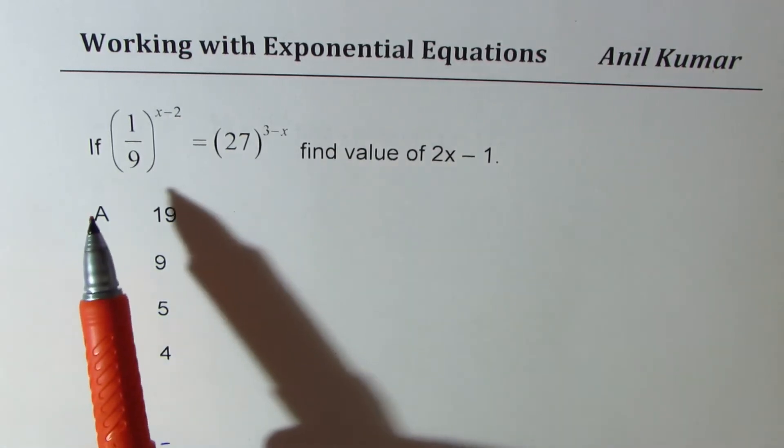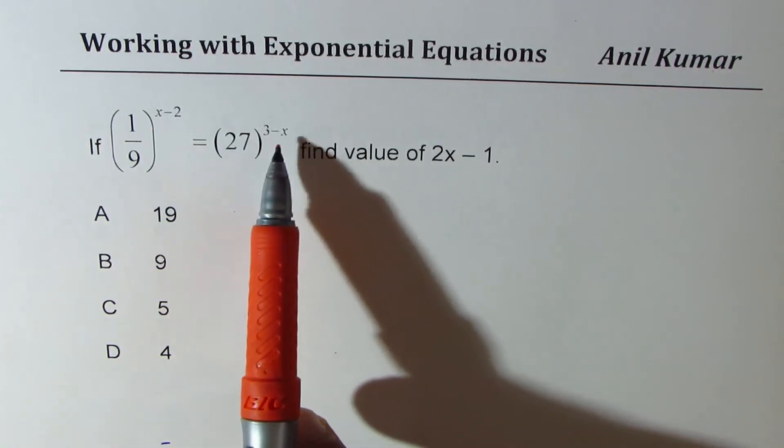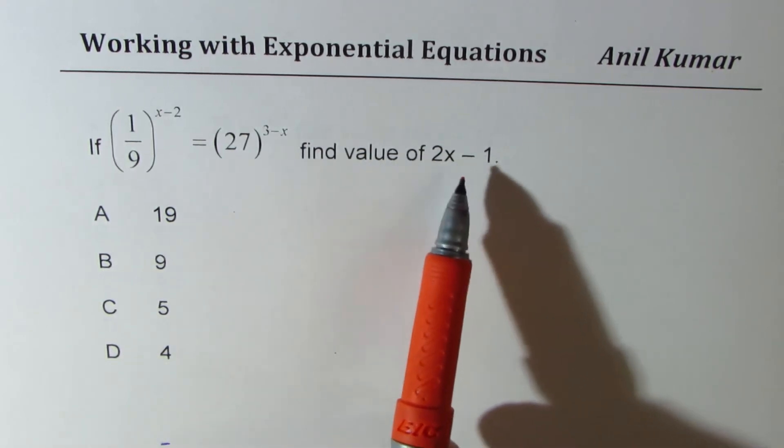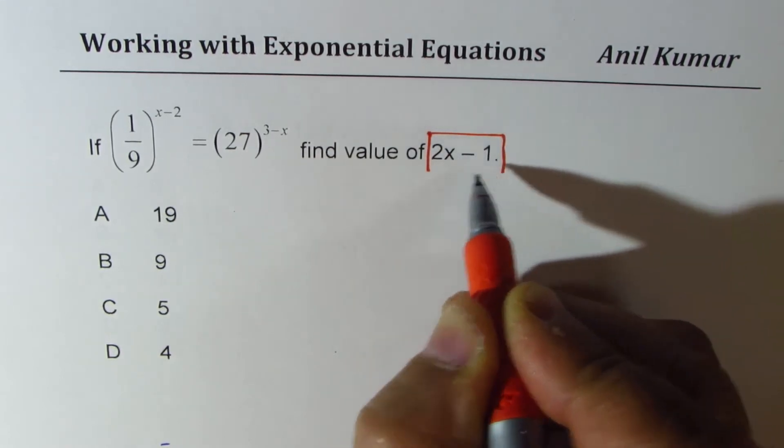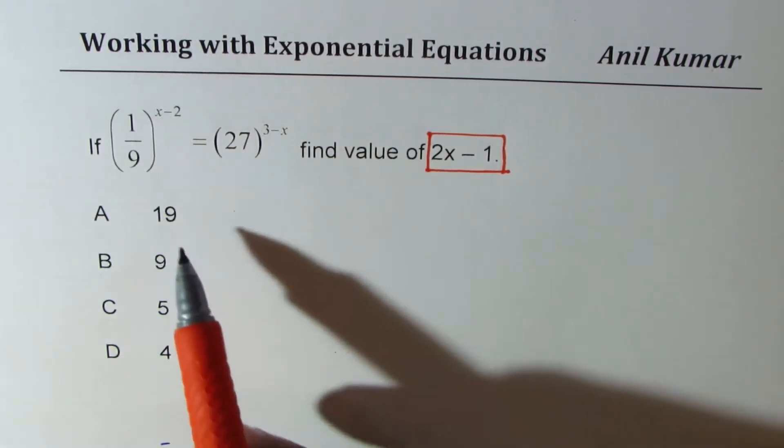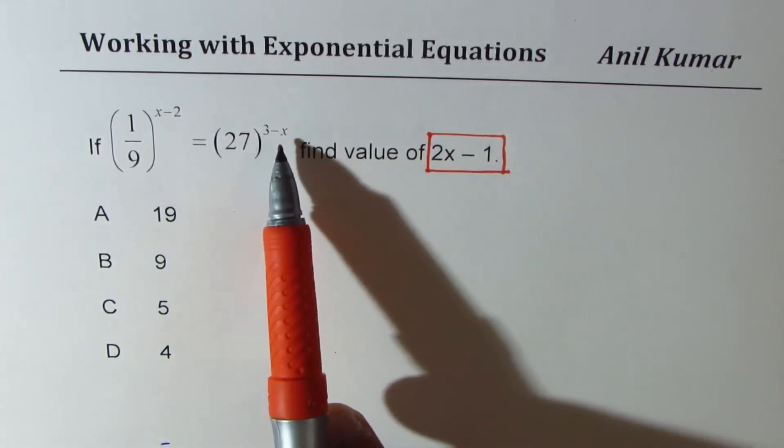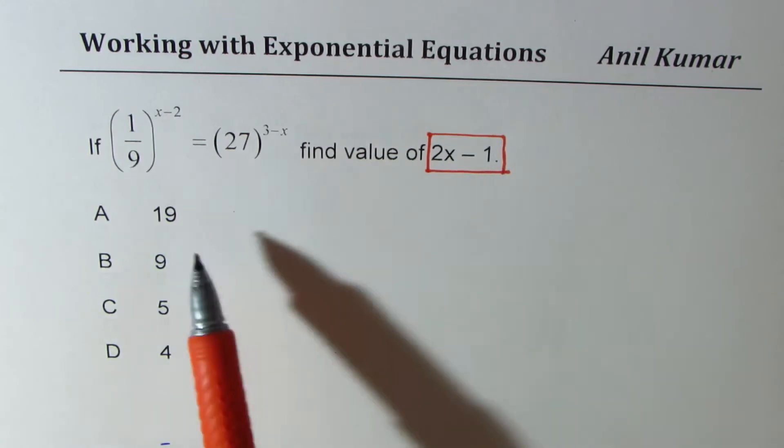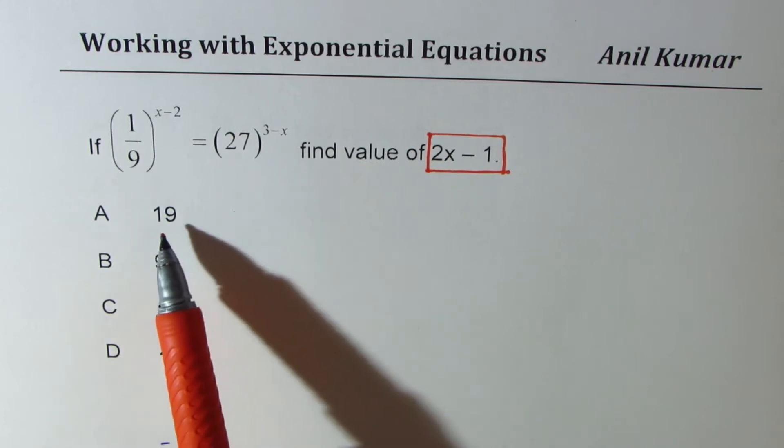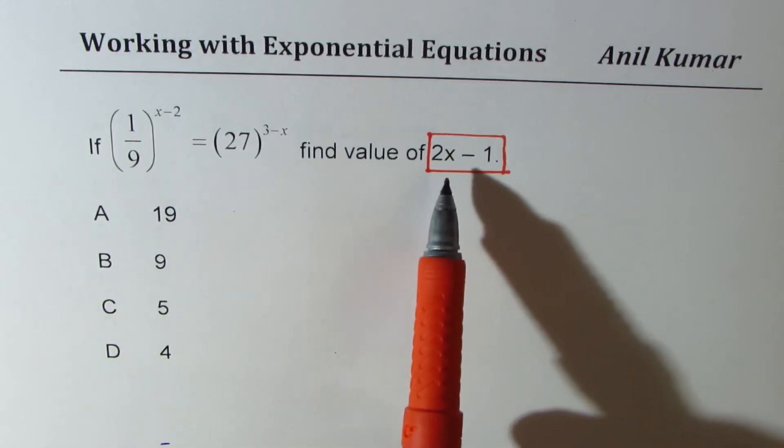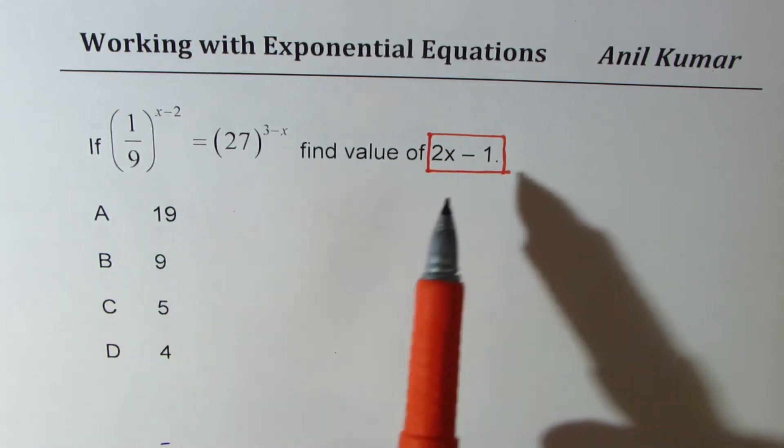The very first question here is, if 1 over 9 to the power of x minus 2 equals 27 to the power of 3 minus x, find the value of 2x minus 1. Now remember, you have to find value of 2x minus 1. So all these solutions correspond to 2x minus 1. Twice the answer of x, take away 1.